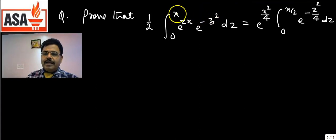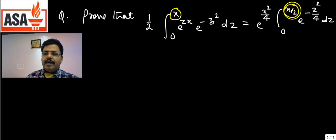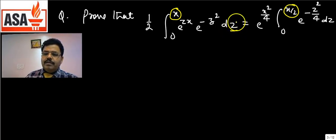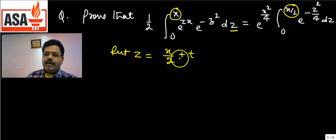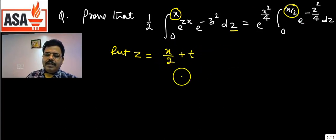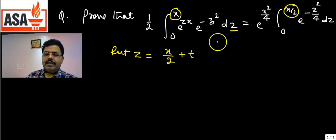To prove this, notice that on the left the limit is x, while on the right the limit is x/2. This suggests the new variable after substitution will be half of the original. Since the variable is in terms of z, we put z = x/2 + t. The limit changes accordingly when we apply this substitution.